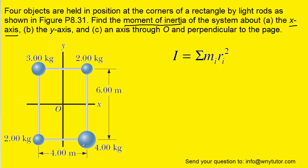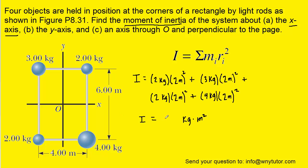So all we have to do is a similar calculation, but this time we'll be plugging in two meters for all of the distances. And when you compute that, you should get 44 kilogram times meters squared. So that's the correct answer to part B.